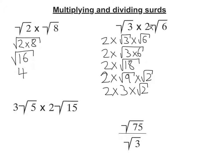And then 2 times 3 is 6. So I've got 6 root 2. Let's move on to my third example. 3 root 5 times 2 root 15.